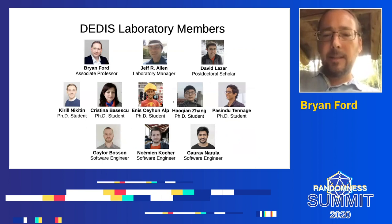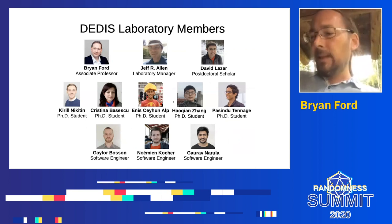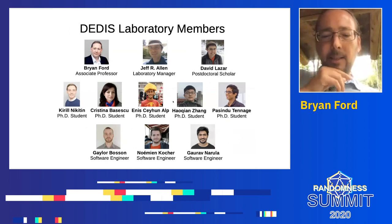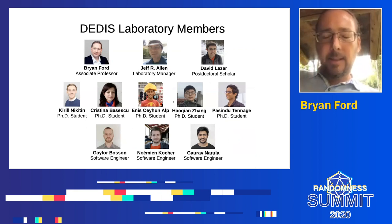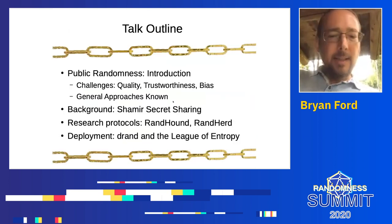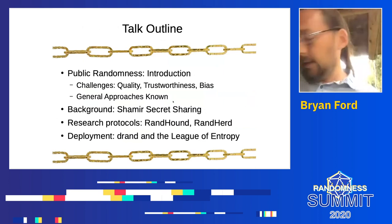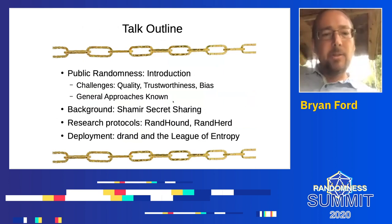Here is a brief introduction to some of the current team members who have made this happen. There are also past DEDIS team members, including Nicola Gailly, who is now at Protocol Labs and is a very central part of the DRAND project. Now let's move on to distributed randomness — first, what is public randomness and why do we need it?